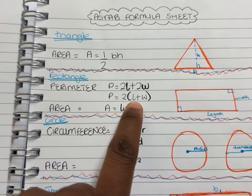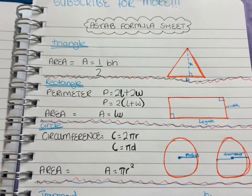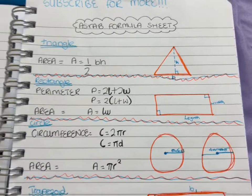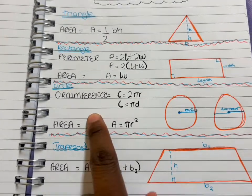For the rectangle to find the perimeter, the second one is multiplying two times the length and two times the width to get the perimeter of the rectangle. And the area, you just do length times width.